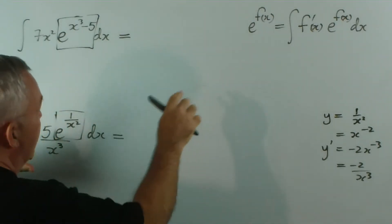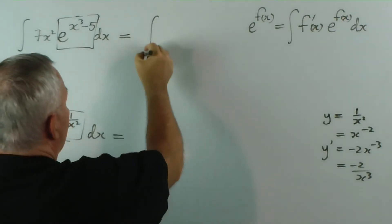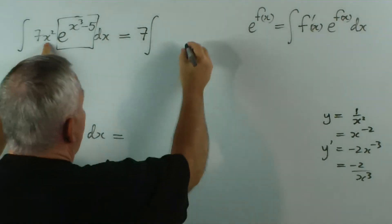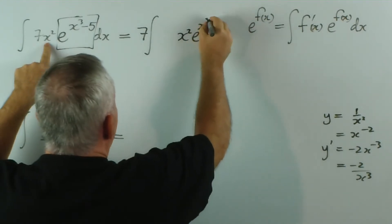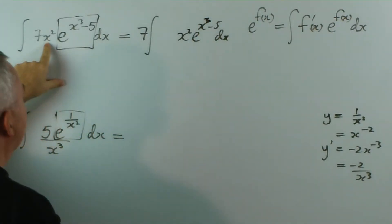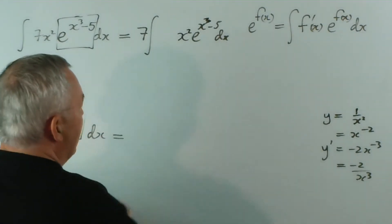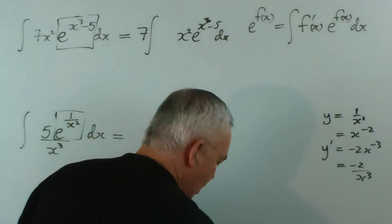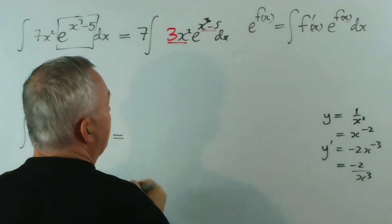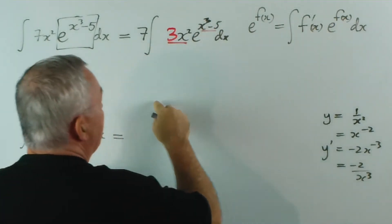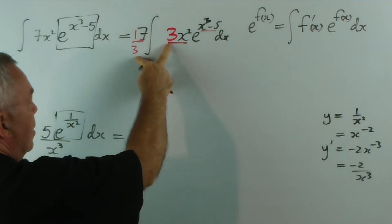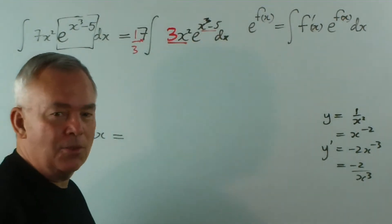So let's perform both integrations using this pattern. First of all, I remove the seven, put it outside the integral because it's just in the road, and I leave the x squared, e to the x cubed minus five dx. What was the derivative of x cubed minus five? It was three x squared. So we need to have a three here in order for that to be the derivative of that, for this to be the derivative of that. And if I have to put a three here, I have to multiply by one-third to compensate, because one-third of three is one, and multiplying by one does not change the value of the integral.